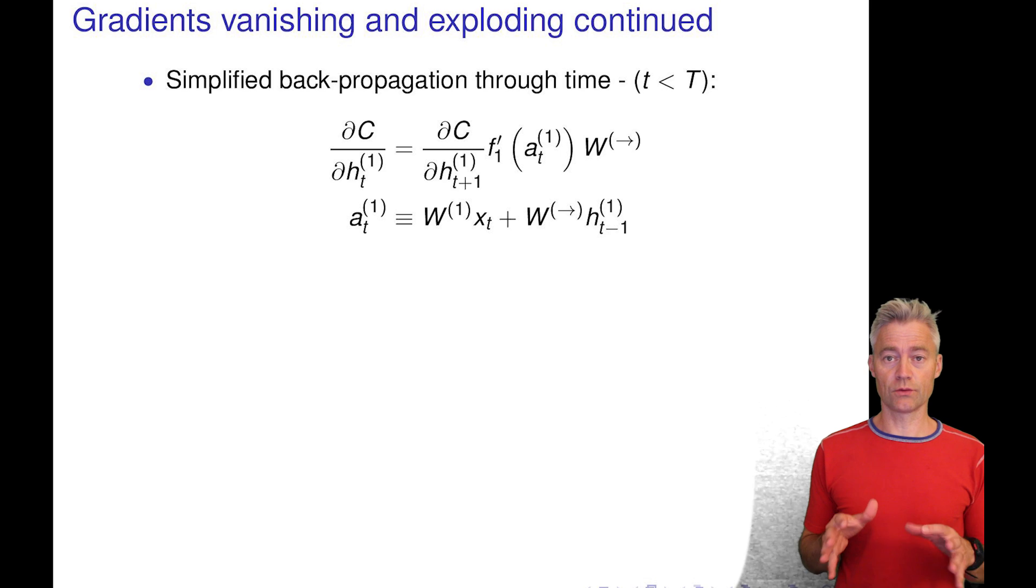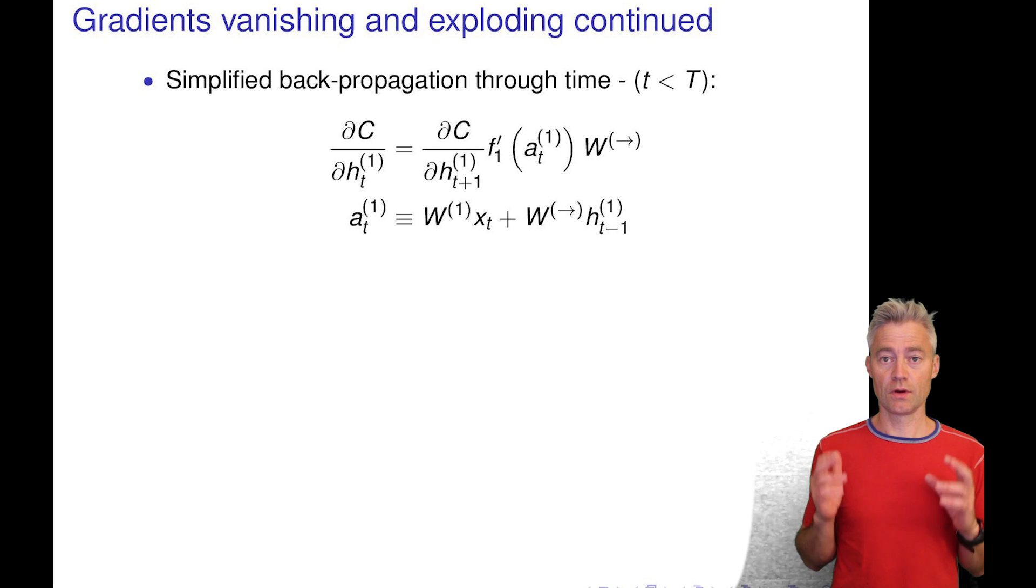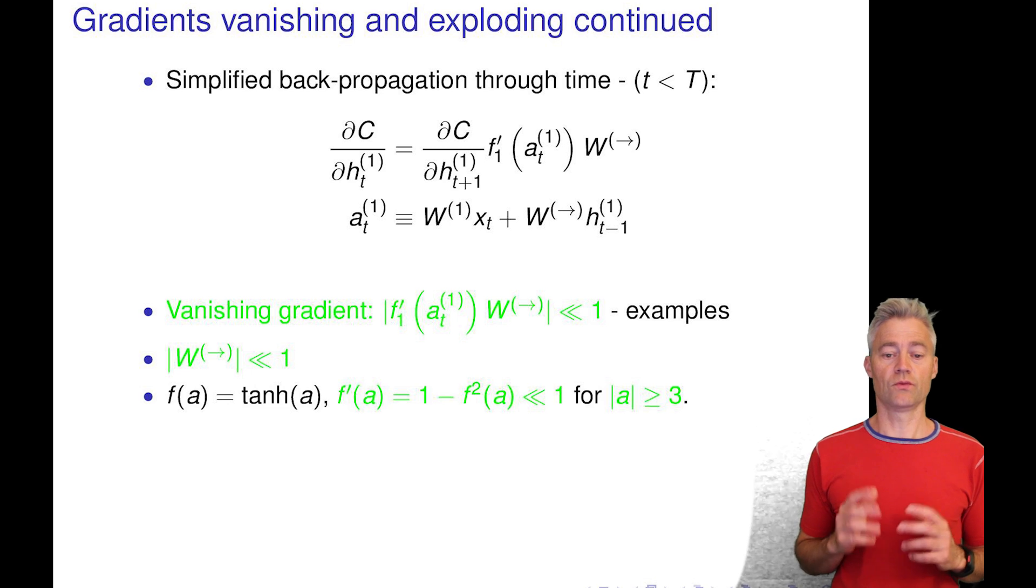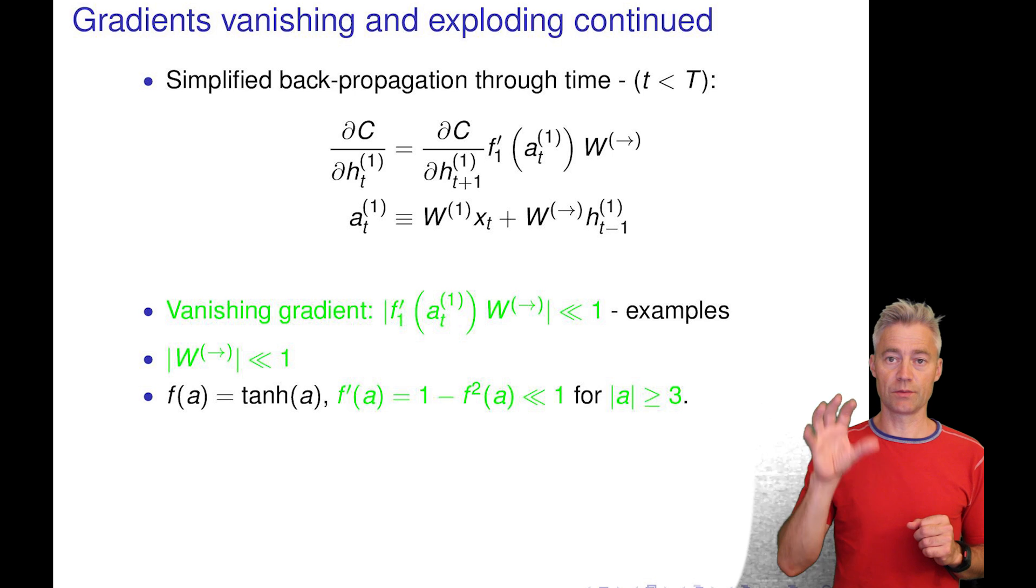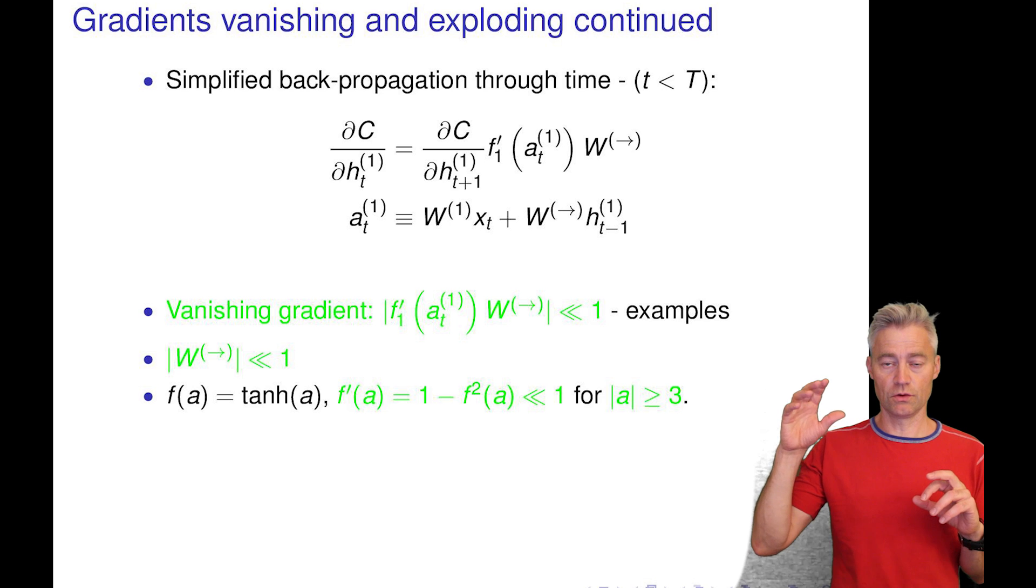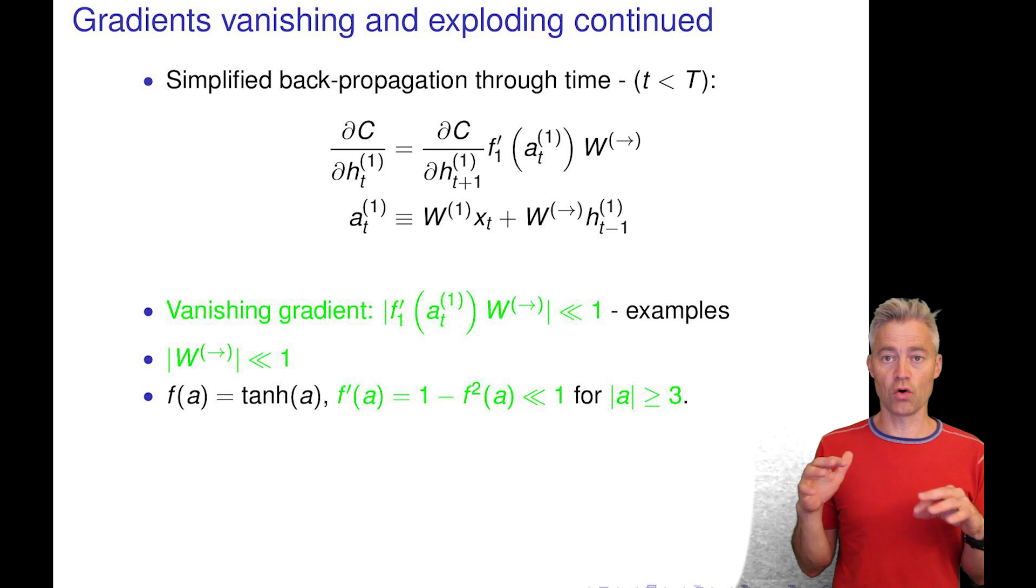And now we have written down the simplified backpropagation through time equations. Let's now try to analyze these for specific settings of activation functions and weights. So here they are again and now let's look at when this recursion backwards in time between the derivative at time t plus 1 and the derivative at time t, when this recursion either vanishes, meaning is being lowered at each step, or can explode.